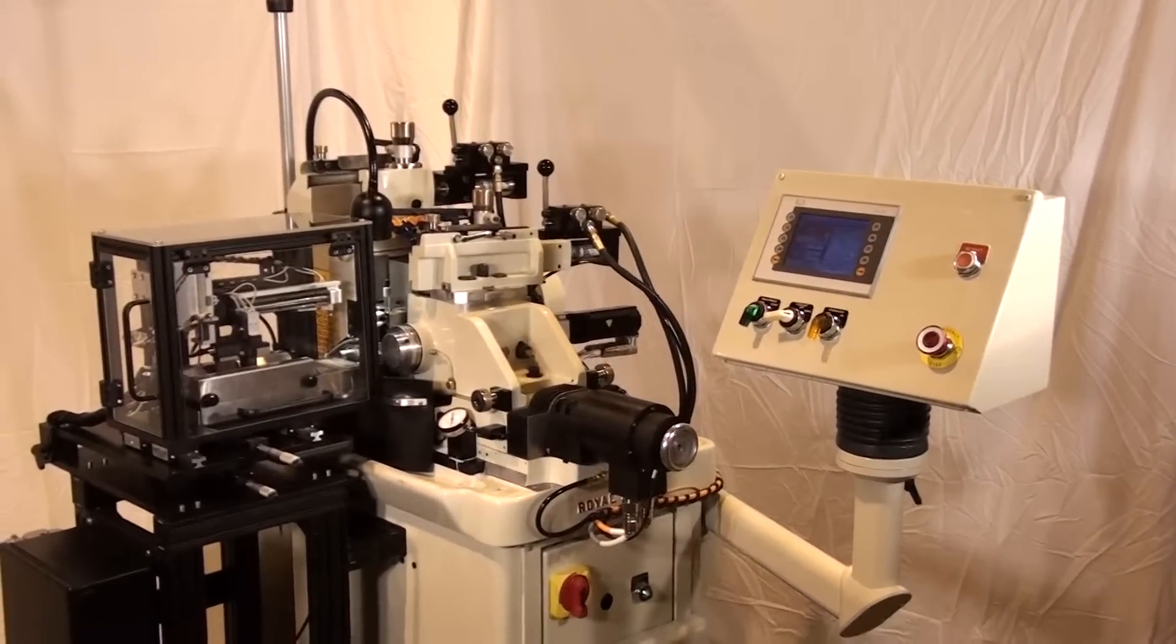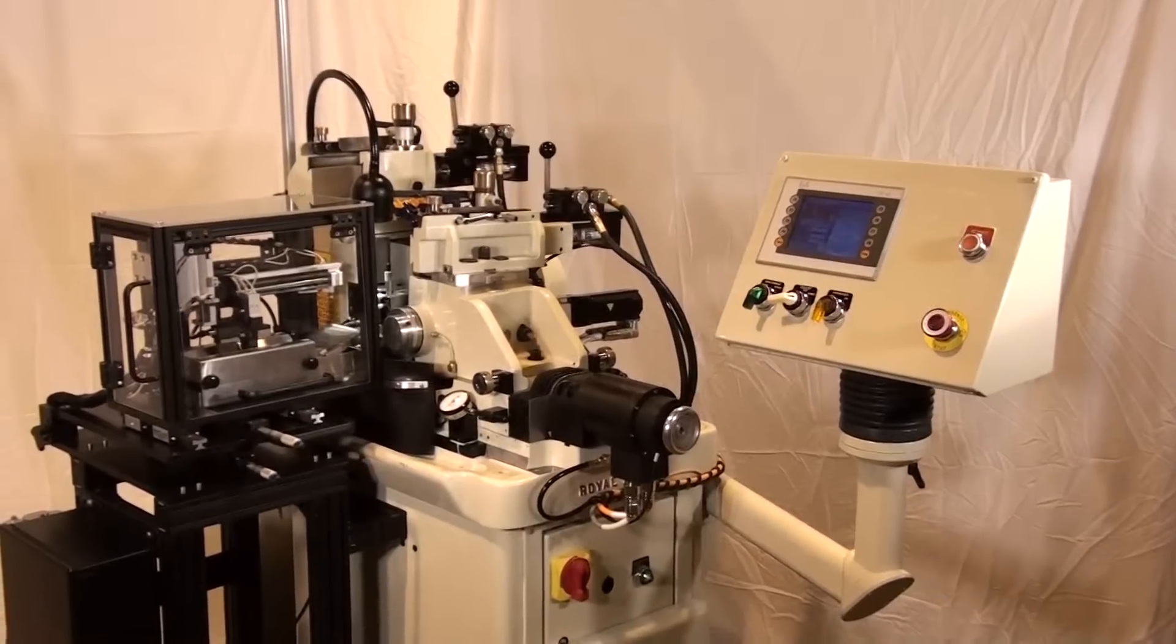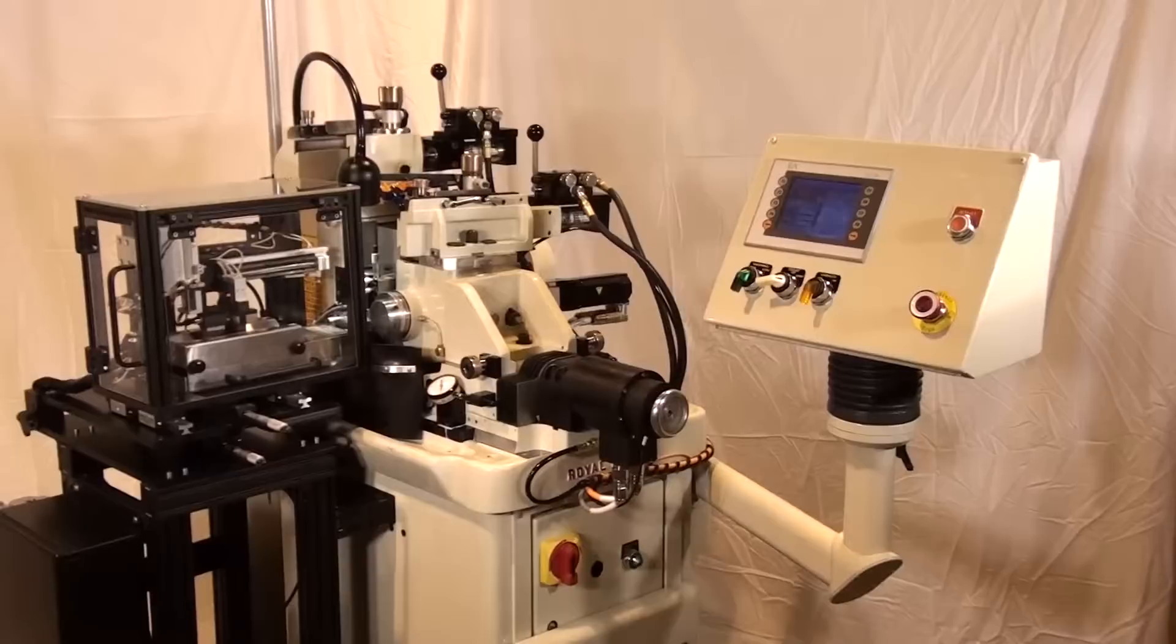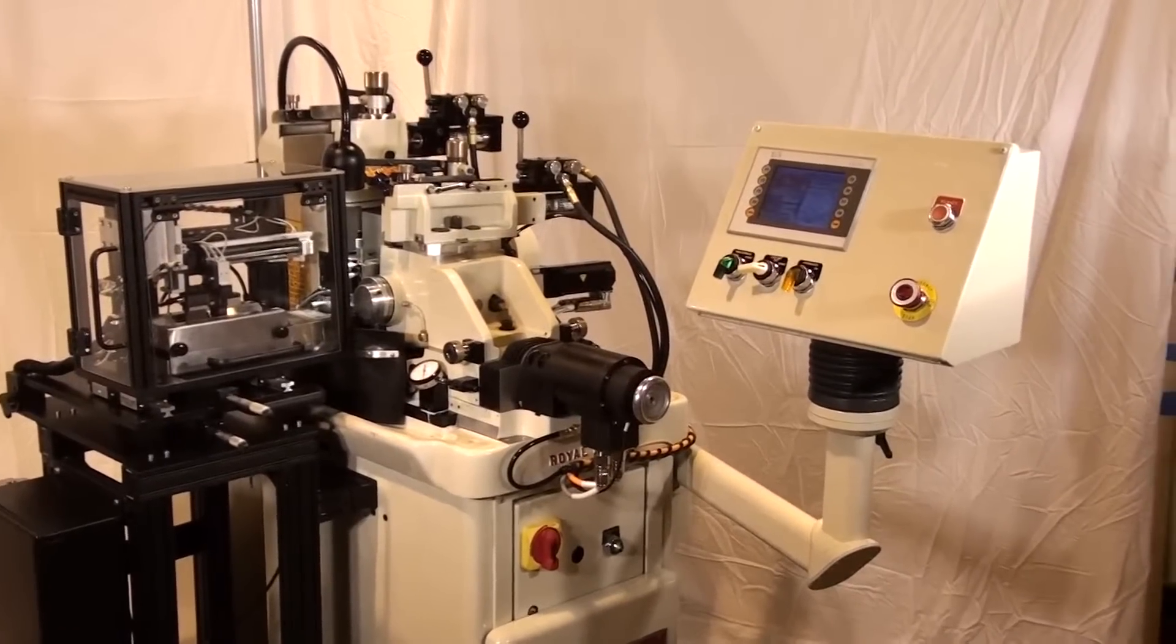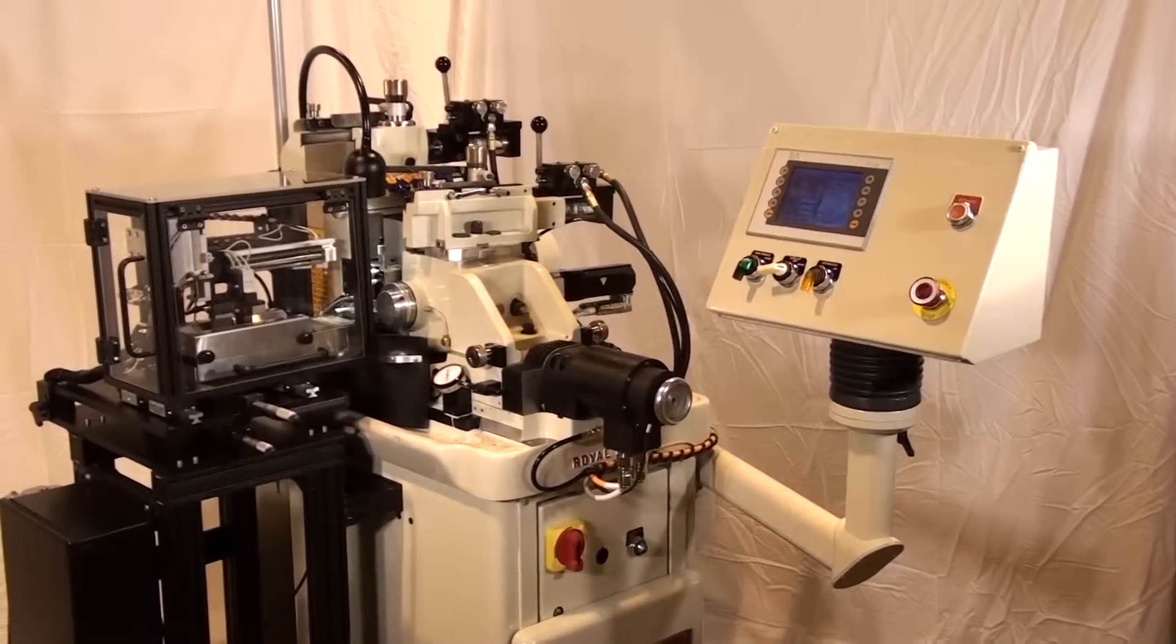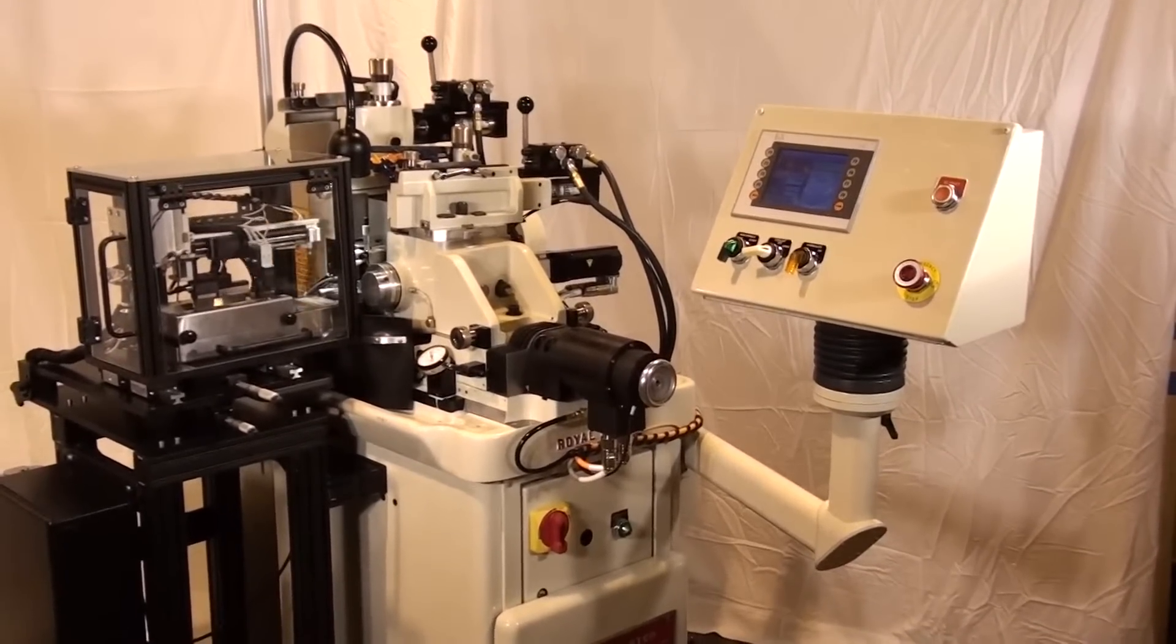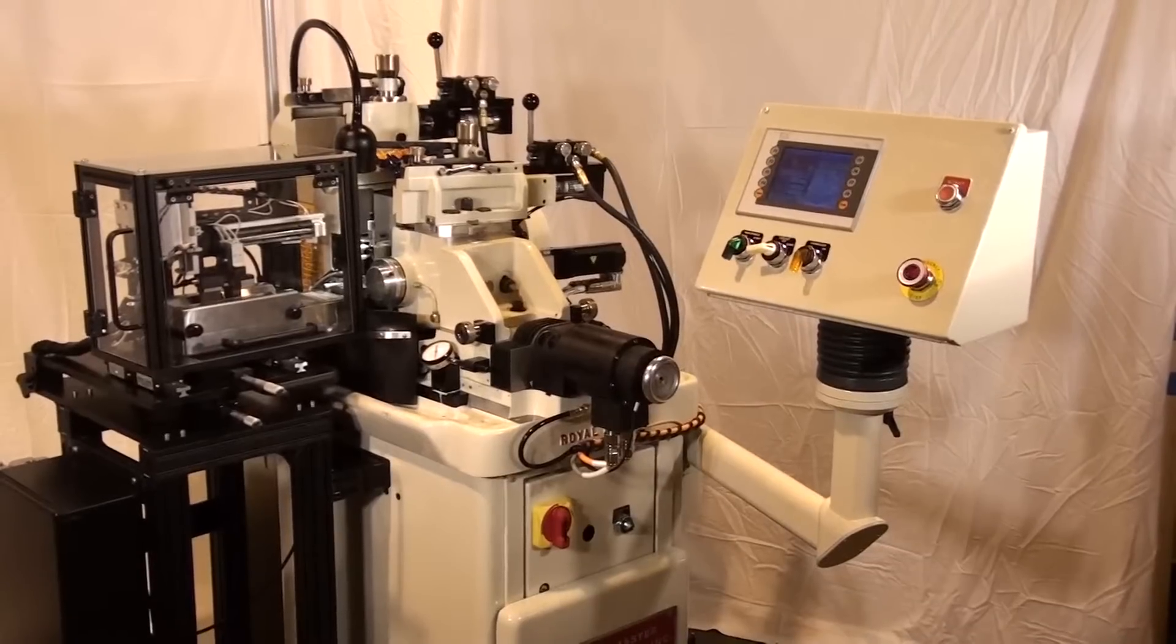This is the Royal Master Grinders model TG 12x4 servo cycle centerless grinder, otherwise known as our CNC light. This particular machine model was designed as an intermediate model in between our standard auto cycle unit and our high accuracy compensating unit.